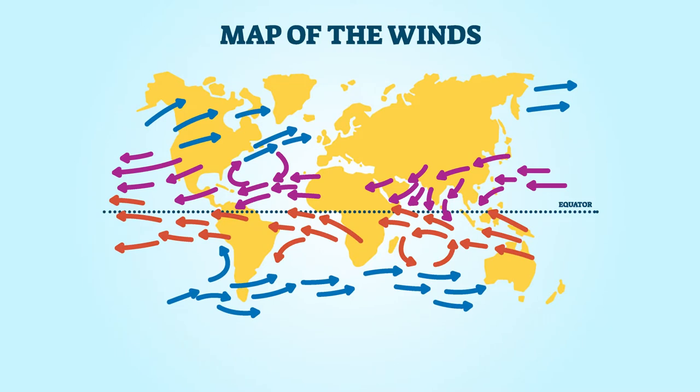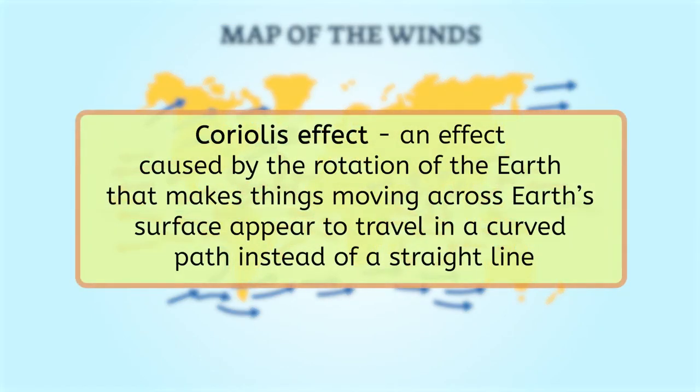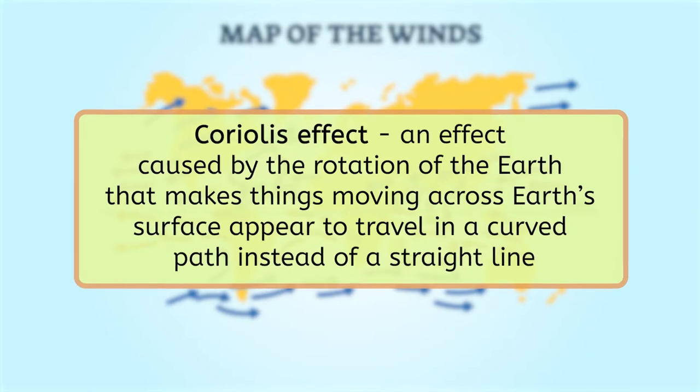The winds don't typically just blow at random, though. They tend to follow certain paths that are influenced by the Coriolis effect. The Coriolis effect is an effect we observe caused by the rotation of the Earth that makes things moving across Earth's surface appear to travel in a curved path instead of a straight line. Basically, the Earth's rotation and the Coriolis effect cause winds to curve around the surface of the Earth.